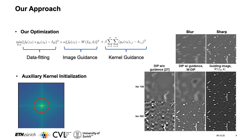At the top we see the blurred image that we want to get the sharp image estimate of. In the left column we see what happens if DIP does not have any guidance — it reconstructs an image with a lot of artifacts. However in the middle column we see that with guidance we get a good sharp image estimate, and to the right we see what our guidance looked like.